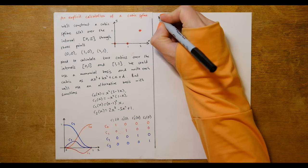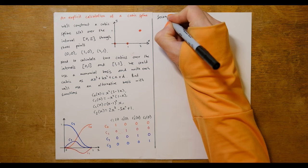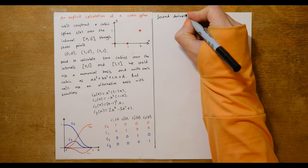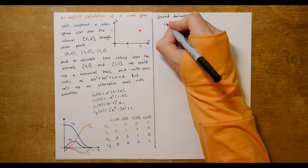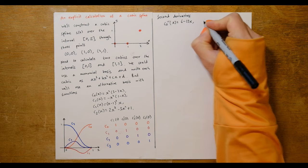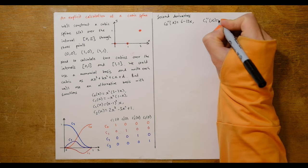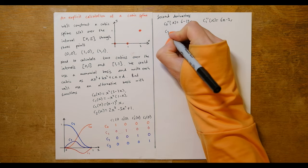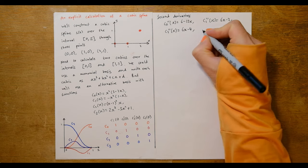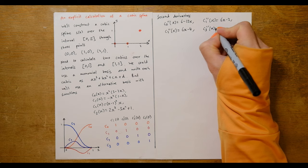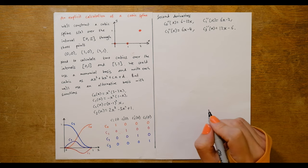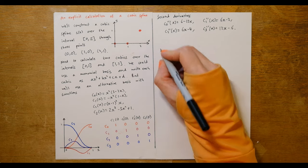We now calculate the second derivatives of our basis functions, which we'll need in order to construct the spline. We have: c0''(x) = 6 - 12x, c1''(x) = 6x - 2, c2''(x) = 6x - 4, and c3''(x) = 12x - 6.